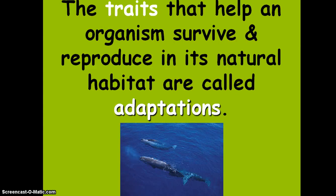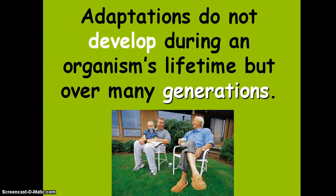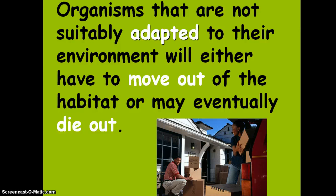The traits that help an organism survive and reproduce in its natural habitat are called adaptations. Adaptations do not develop during an organism's lifetime, but over many generations. Organisms that are not suitably adapted to their environment will either have to move out of the habitat or may eventually die out.